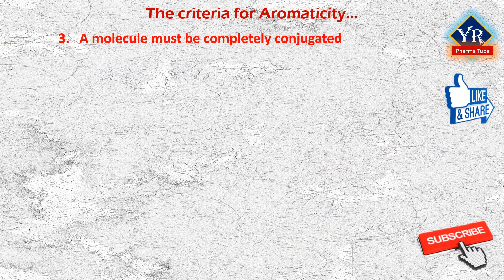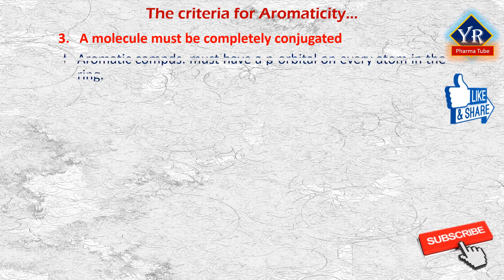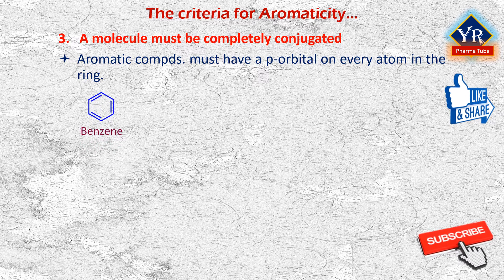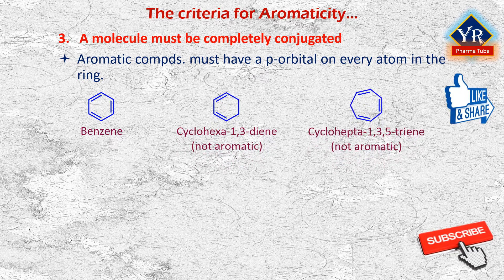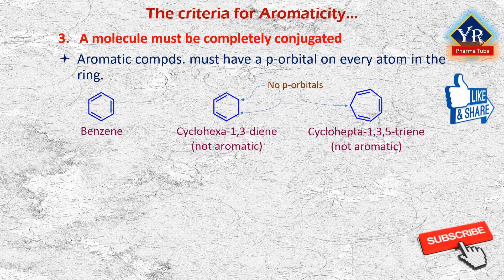Number three: a molecule must be completely conjugated. Aromatic compounds must have a p orbital on every atom in the ring. Benzene has a p orbital on every carbon atom, therefore benzene is aromatic. While both cyclohexa-1,3,5-diene and cyclohepta-1,3,5-triene contain at least one carbon atom that does not have a p orbital, so they are not completely conjugated and therefore they are not aromatic compounds.